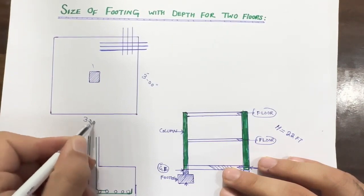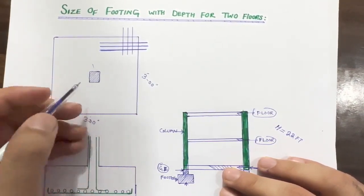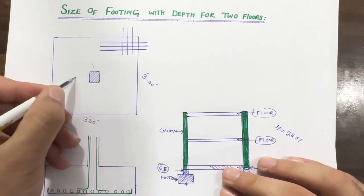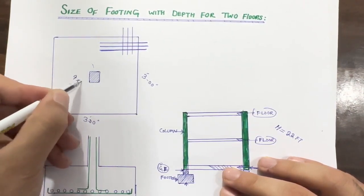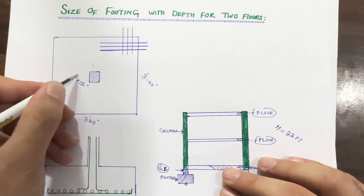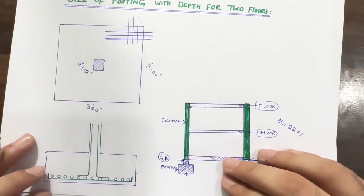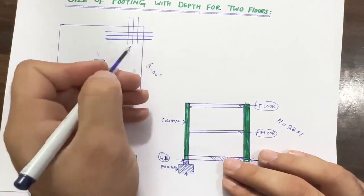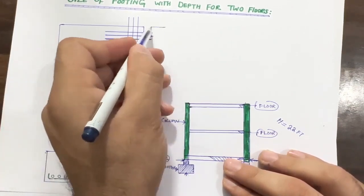So this is the size of the footing with the column inside. For a two-floor building, the column size you can keep is nine by twelve inches — this is a rectangular column. Now let me guide you for the section details, but before that I will guide you for the steel reinforcement.